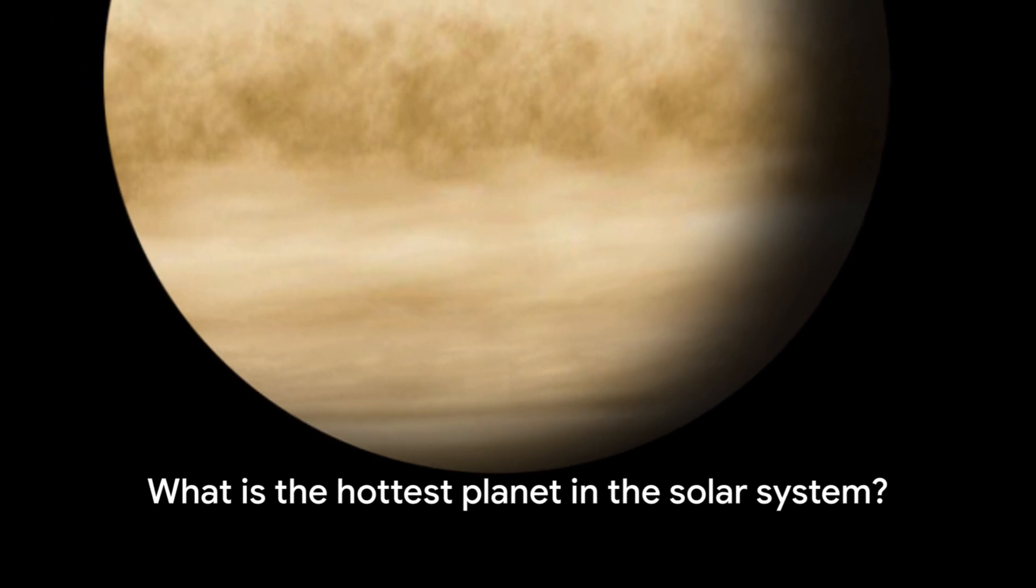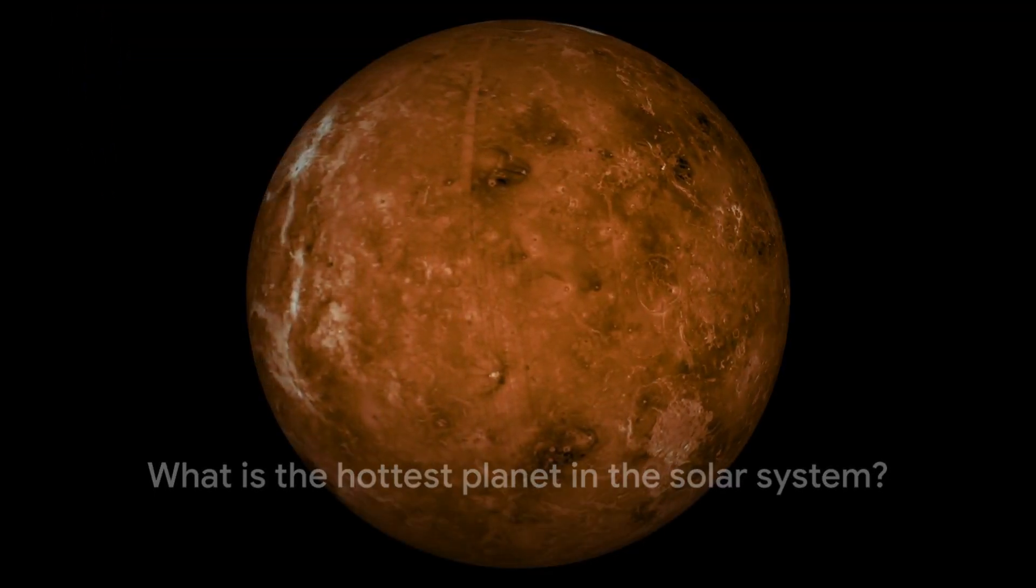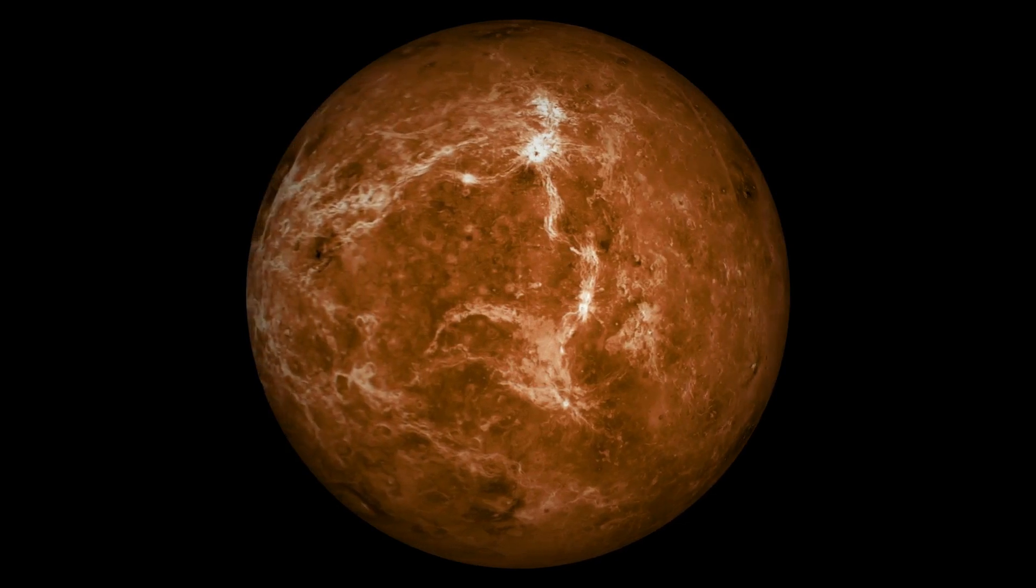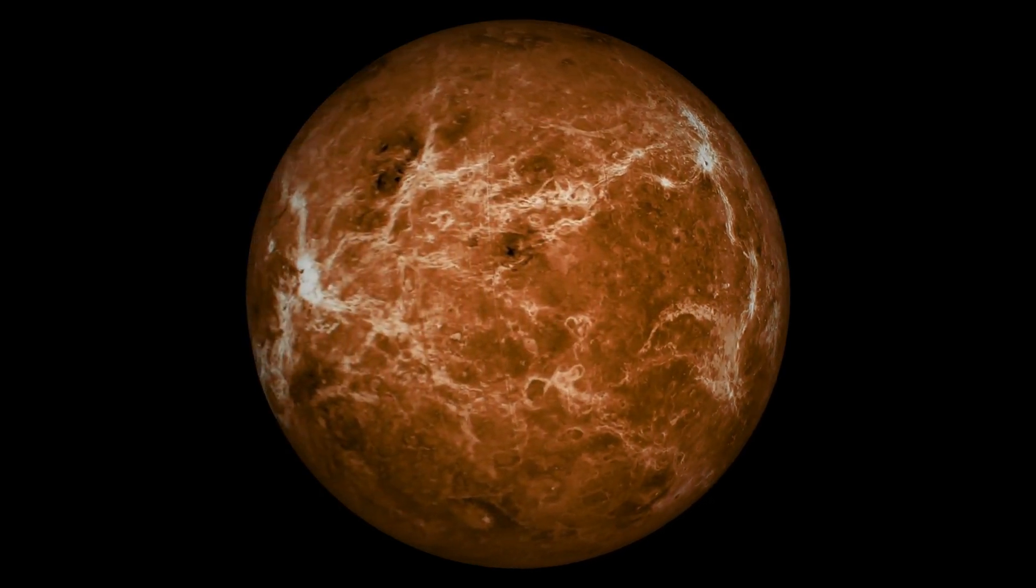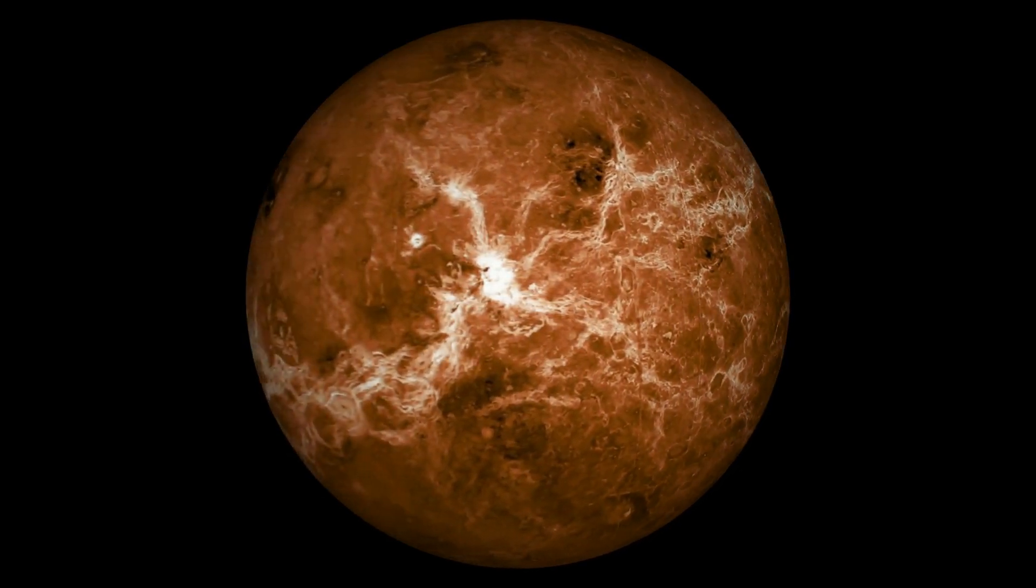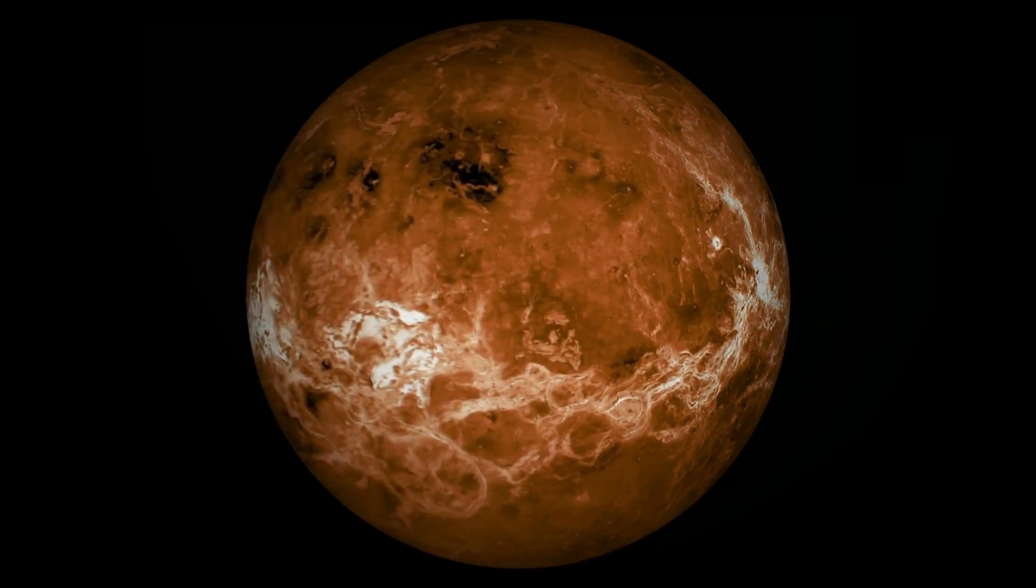Venus is the hottest planet in the solar system, with surface temperatures reaching up to 900 degrees Fahrenheit, 475 degrees Celsius. This extreme heat is due to its thick atmosphere, which traps heat from the sun.